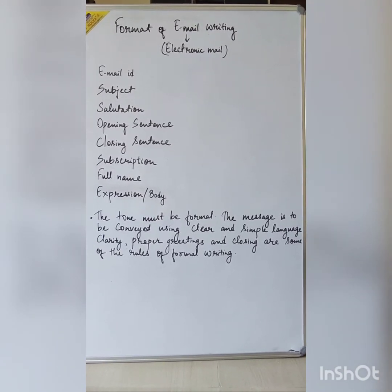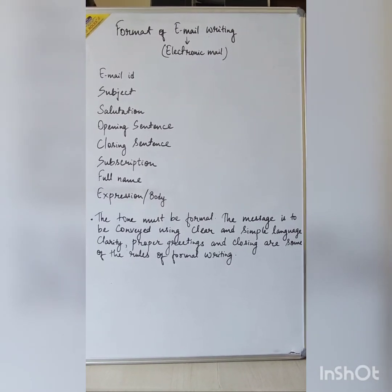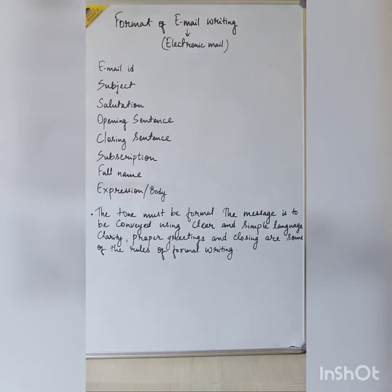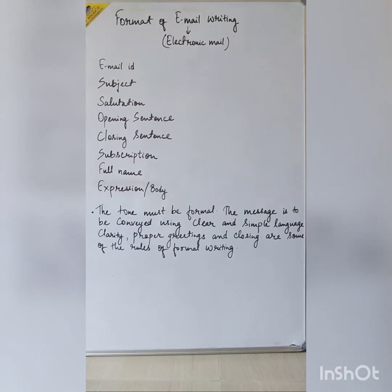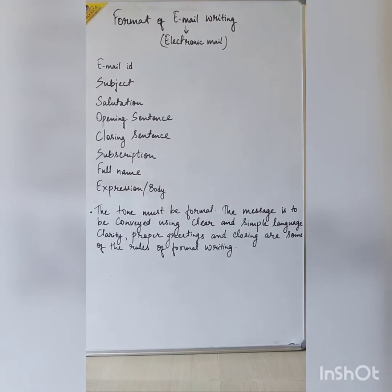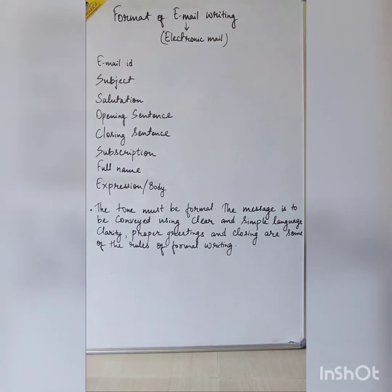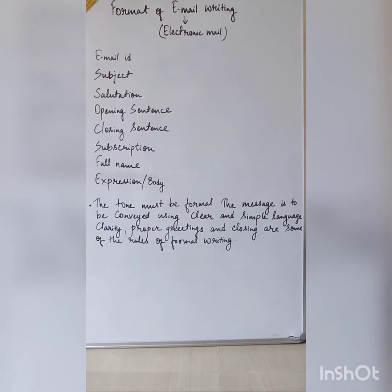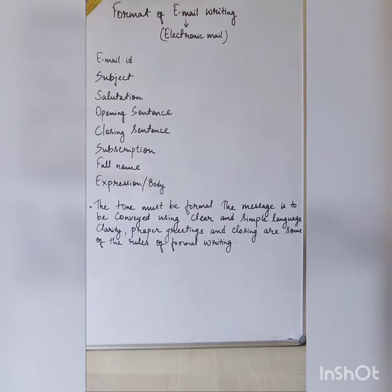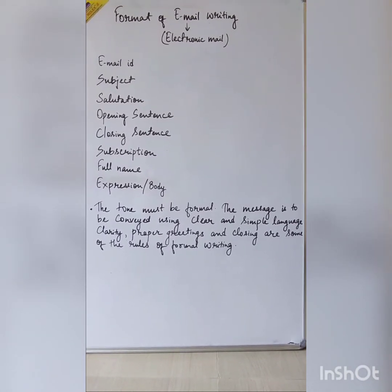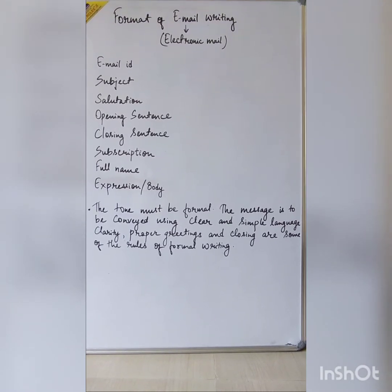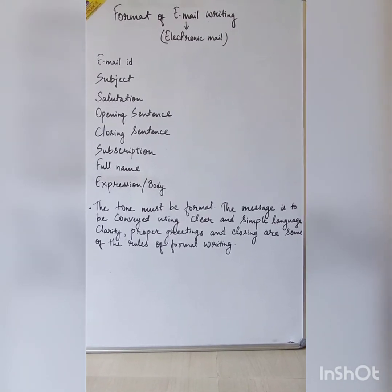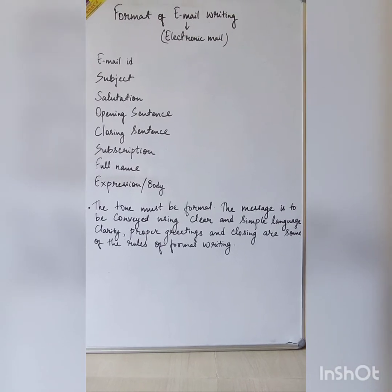The first thing we need in email writing is an email ID — to whom you are sending. Below that, you will find the subject, or the purpose of writing this email. Third is the salutation, just like in letter writing: 'Dear Sir,' 'Dear Ma'am,' 'Respected Sir,' 'Respected Ma'am.' Below that will be your opening sentence and the body — a few lines explaining the purpose of writing. Then comes the closing sentence.